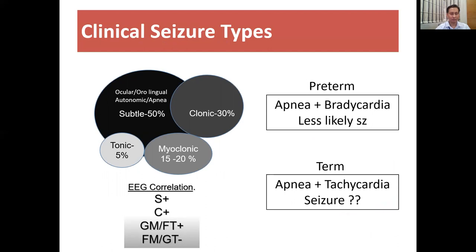Out of all these types, subtle seizures contribute up to 50% and can present as ocular, oral-lingual, autonomic dysfunctions, or sometimes apnea. Though the name is subtle, it is a misnomer because in most cases of subtle seizures, the brain damage is in the highest range compared to other clinical types. Looking at clinical correlations, subtle seizures, clonic seizures, generalized myoclonic, and focal tonic have good EEG correlations, as compared to focal myoclonic and generalized tonic seizures. Regarding apnea as a seizure type, in term infants apnea could be a type of seizure, whereas in preterm infants most of the time it is because of immaturity and is part of apnea of prematurity.